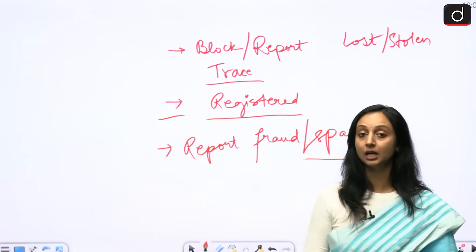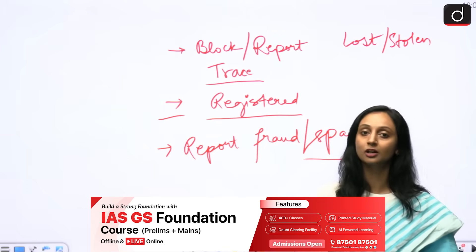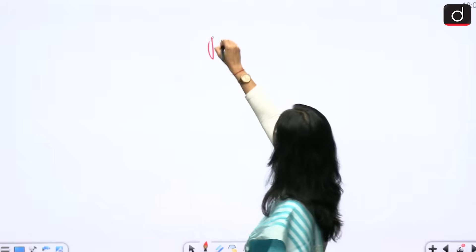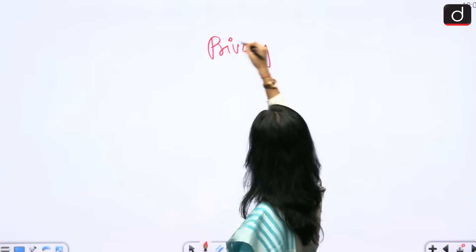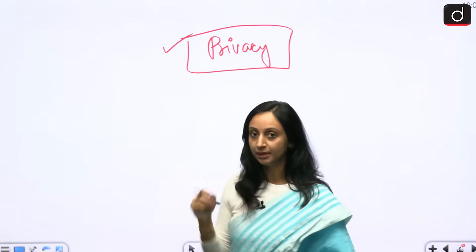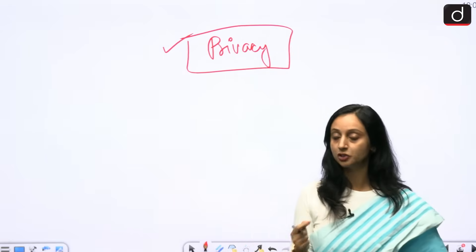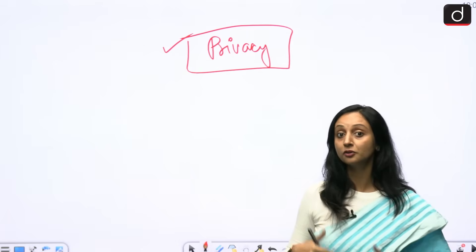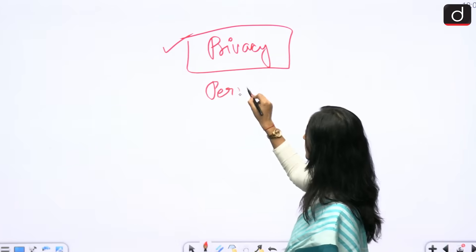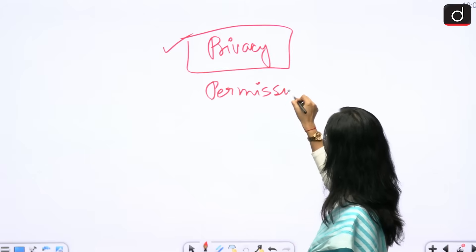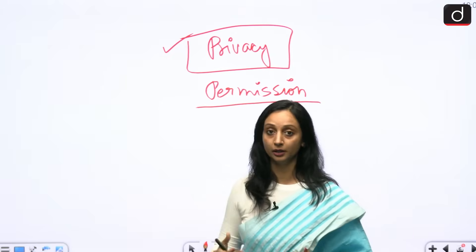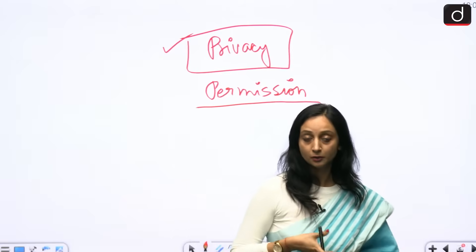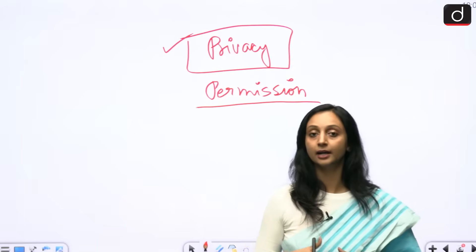Then what is the problem? If the government wants this to be pre-installed, what is the problem? The problem is a privacy concern. The application itself and its intention are not the problem. But whenever you install an application, there are a lot of permissions you have to grant in order for it to work — permission of your camera, location, gallery, contacts, and many other things.